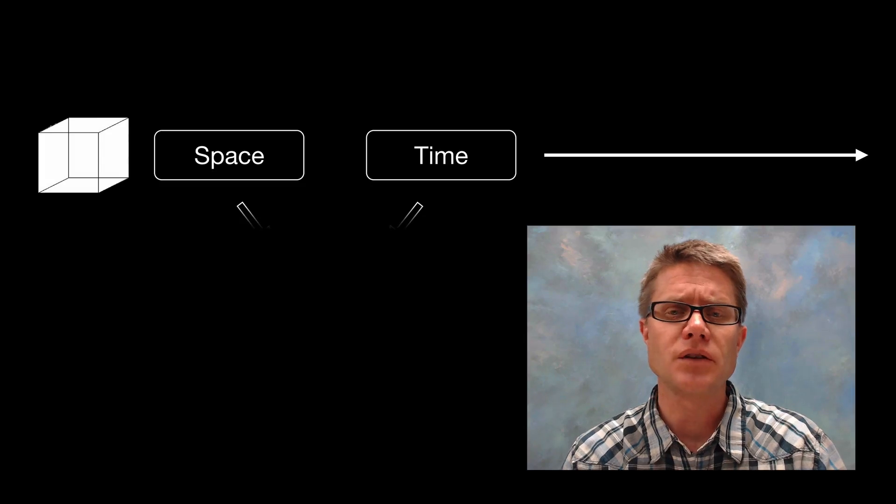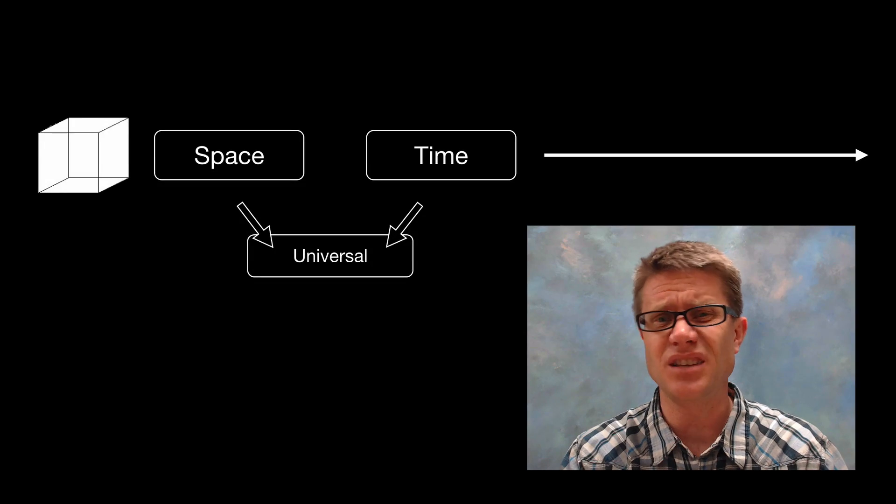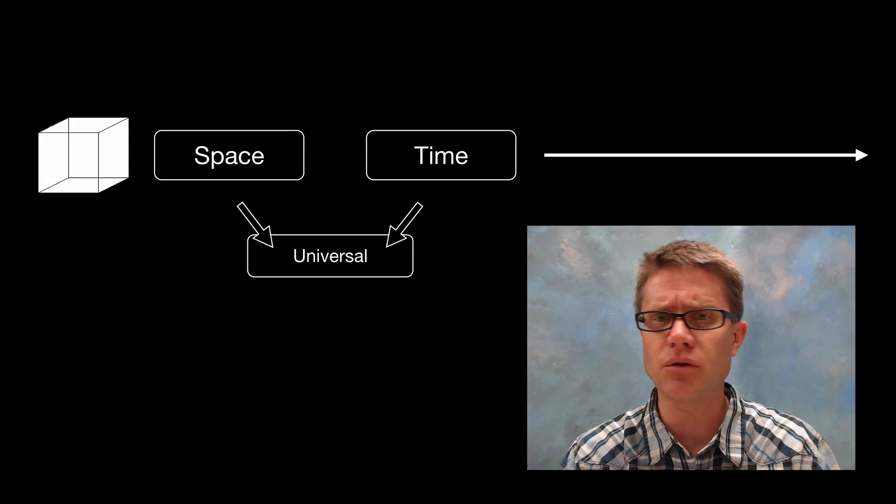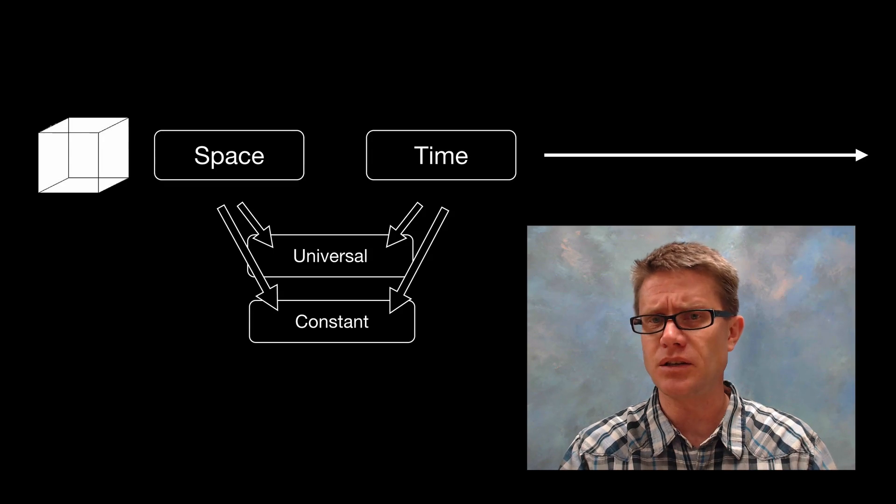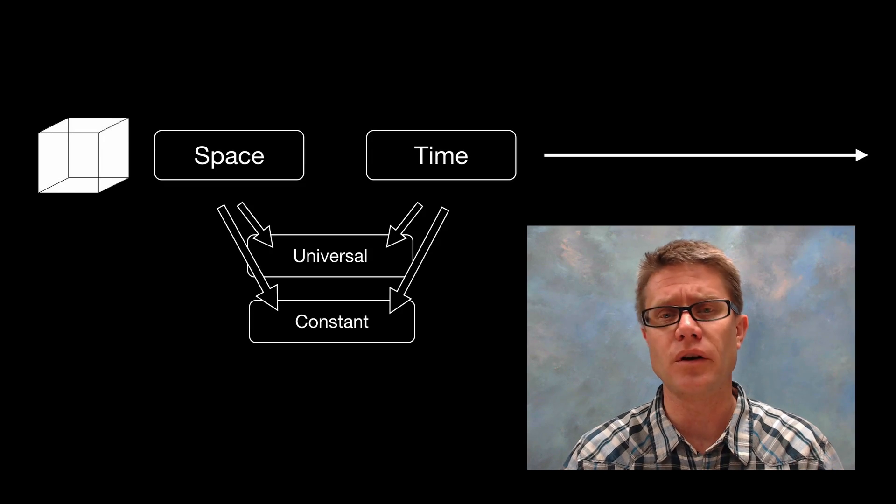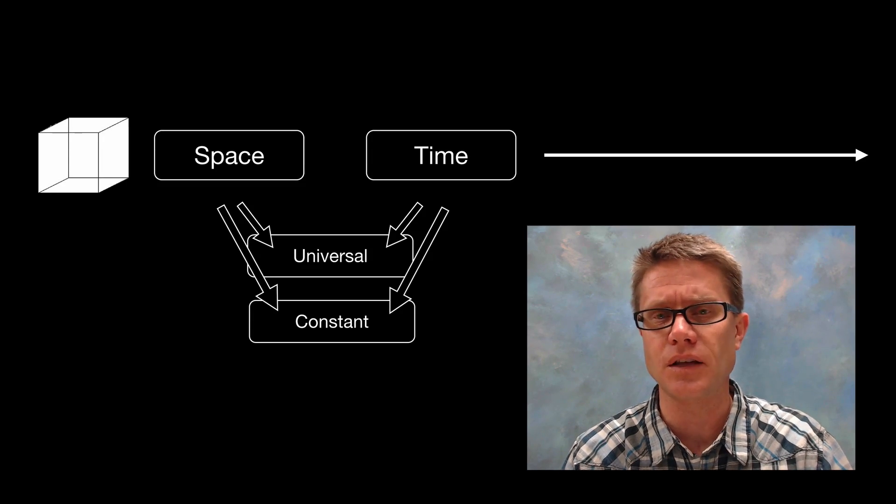We've always assumed that space and time are universal, the same throughout the whole universe, and that they are constant. Space here is the same as space somewhere else, and time progresses along the same route.